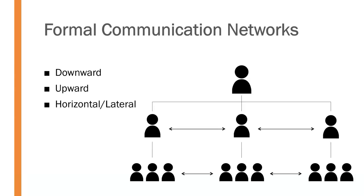Horizontal or lateral communication is communication that occurs at roughly the same level of an organizational structure — typically between colleagues who are at approximately the same level of influence or power within that organization. It could be between departments or within a department. The tone here is a little different: we're not giving orders to people at the same level, but we're also not quite as deferential as we would be with upward communication. Horizontal communication tends to take on a more even or neutral tone.